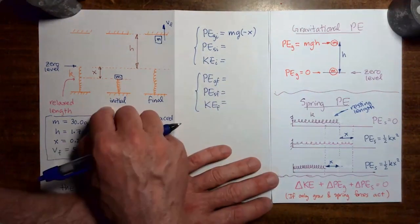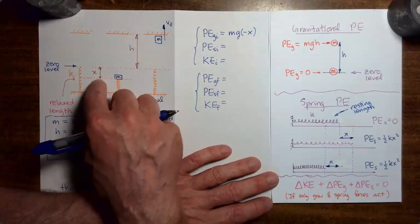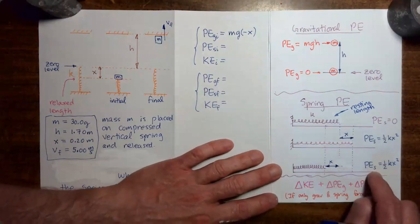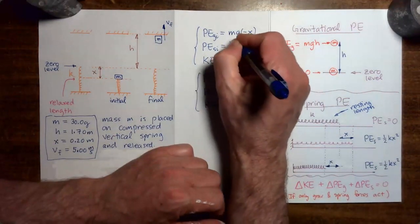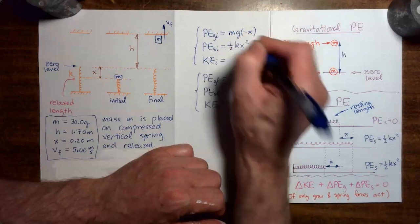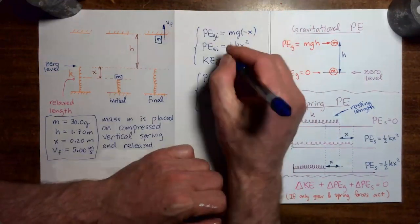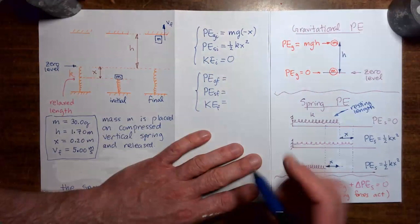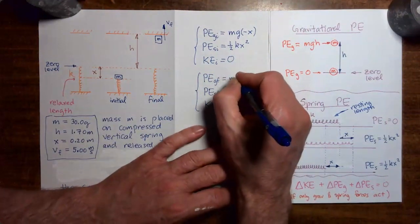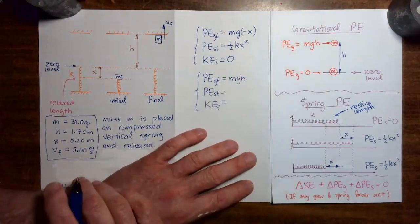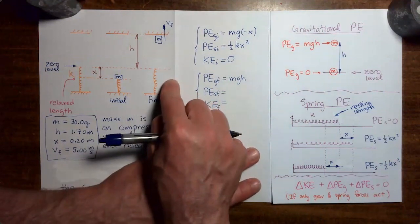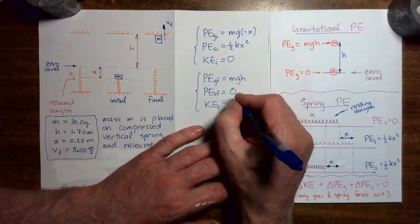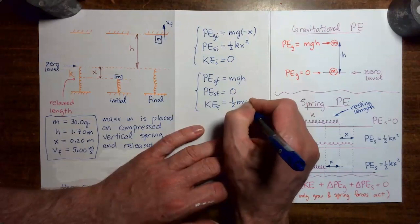Initial spring potential energy: the spring has been compressed by a distance x, so we use one-half k x squared. Initial kinetic energy is zero — the mass is not moving yet. In the final situation, the mass is at height h above the zero level, so the gravitational potential energy final is mgh. The spring has returned to its relaxed length, so final spring potential energy is zero. And final kinetic energy is one-half m v-final squared.